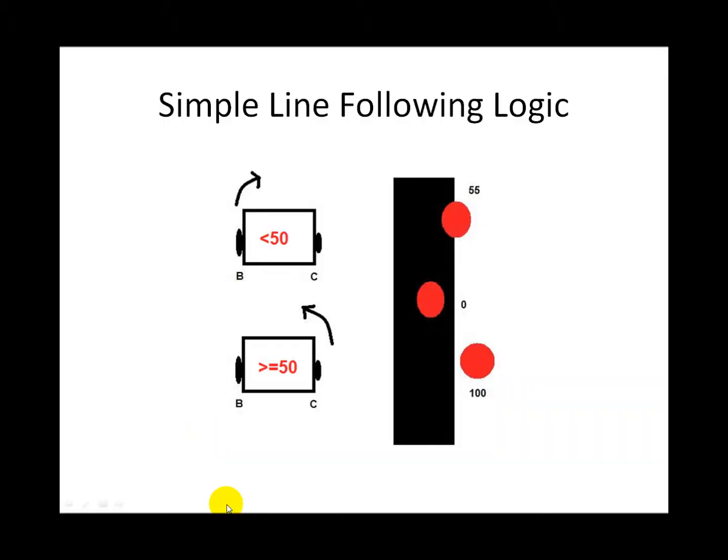This video explains how a simple line following program works. If you've calibrated your light sensor, you're going to get values from 0 to 100: 0 for dark colors like black and 100 for light colors like white.